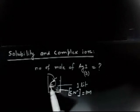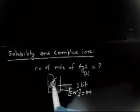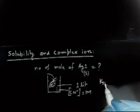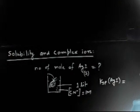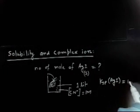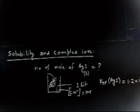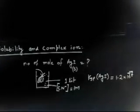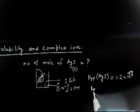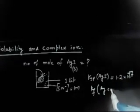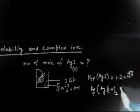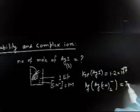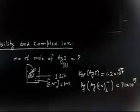So we have a solid AgI put into this solution, and we have to tell what is the number of moles of AgI that will be dissolved in one liter solution. Two values are given: Ksp for AgI is 1.2 × 10⁻¹⁷, and the formation constant Kf for Ag(CN)₂⁻ — since Ag⁺ forms a complex with coordination number 2 — is 7.1 × 10¹⁹.